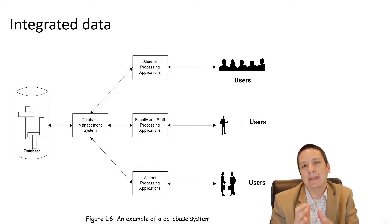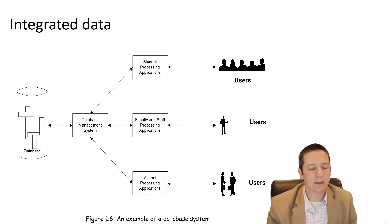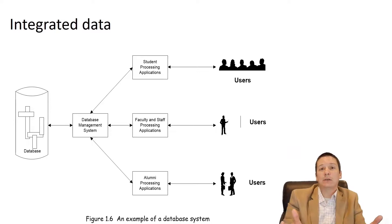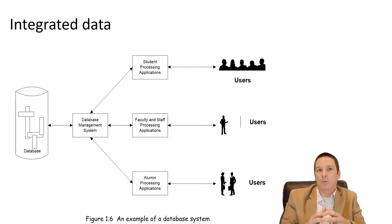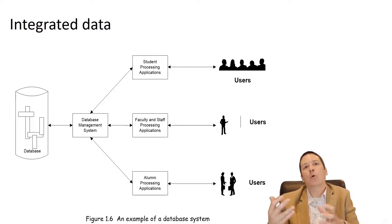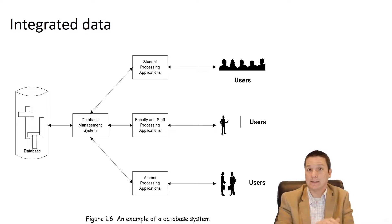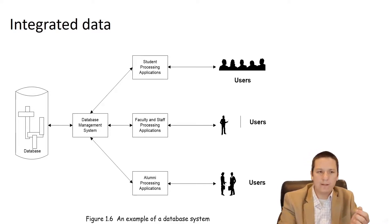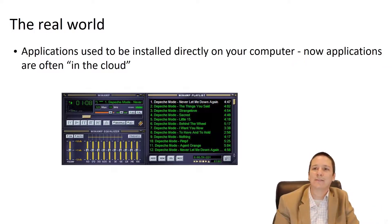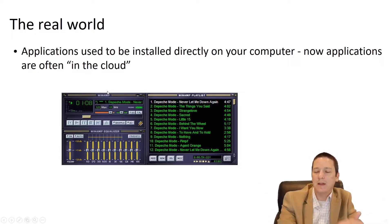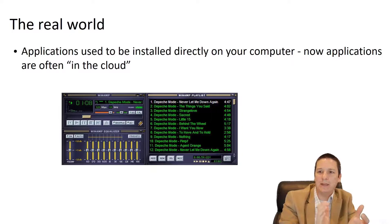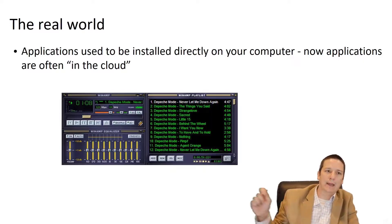Moving from isolated, segregated data to integrated data brings all kinds of great benefits. We see this in everyday life with the dominance of cloud computing. Back in the late 1990s and 2000s, if you wanted to play music on your computer, you'd use an application like Winamp. But all your data was locally stored and locally managed. If you added new songs at your work computer, they didn't show up at home — you had to copy the MP3 file and take it home. If you updated a playlist, you'd have to make the same change on every machine.